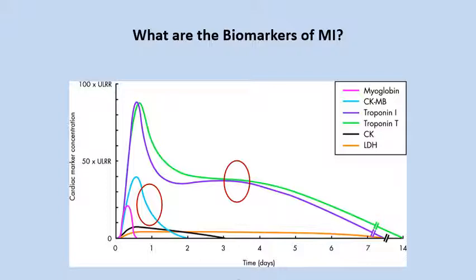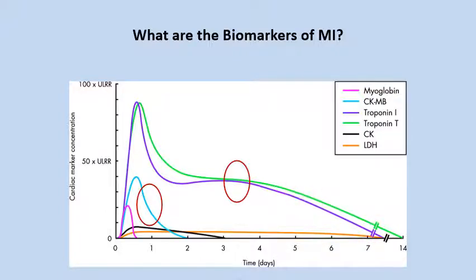Another advantage of analyzing troponin I and troponin T is that they remain elevated in the blood for a long period of time — more than one week. Therefore, we can diagnose even late presentations of myocardial infarction by analyzing these two biomarkers.